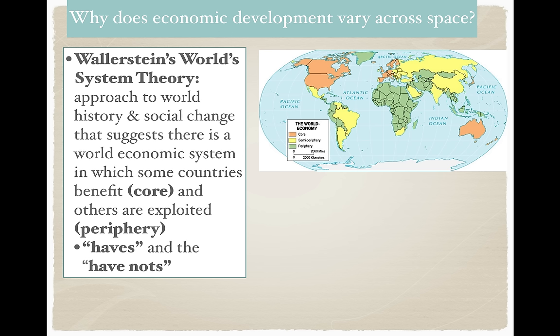World systems theory was an approach to world history and social change. It suggests that there's a world economic system — connecting everybody — in which some countries benefit (the core countries) and others are exploited, meaning taken advantage of. The peripheries are taken advantage of; that's again the concept of the haves and the have-nots. This is the idea that some countries are taking advantage of others in order to make themselves core countries.